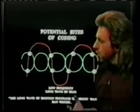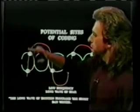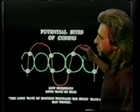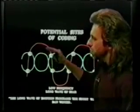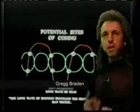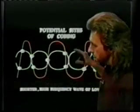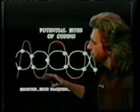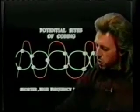Fear and love. Fear is a long, slow wave of emotion. This wave of fear is a long, slow wave and touches relatively few sites on this DNA. So an individual living in fear is limited to the number of antenna that they have available to them. Whereas an individual living in the pattern of love — this is love in DNA — you can see it's a higher frequency, shorter wavelength. We have many more potential sites for coding along that genetic pattern.